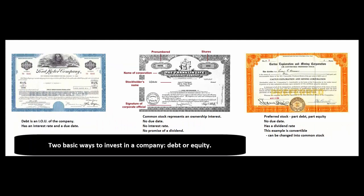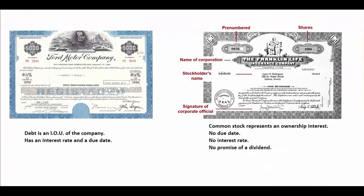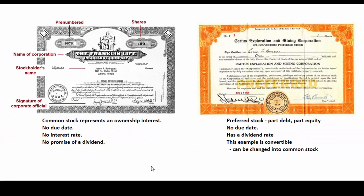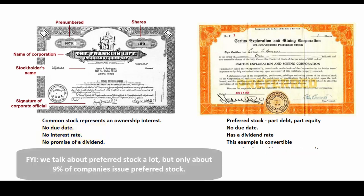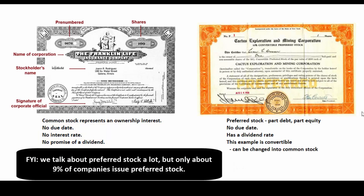There are two basic ways for a saver to invest in a corporation: debt and equity. Debt is when the company borrows money and the saver lends to the corporation — an example would be a corporate bond, which is an IOU with an interest rate and a due date. There's also equity, where the company sells shares of itself. Common stock has no due date, no interest rate, and no promise of a dividend.